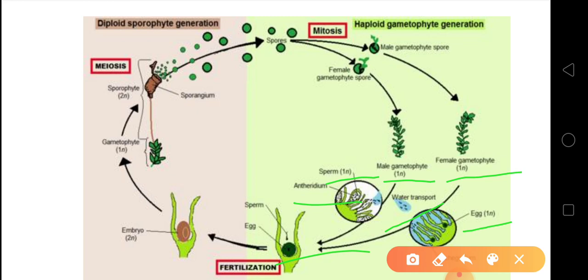The gametophyte is N, so when fertilization occurs they form a zygote that is 2N. The zygote further develops into an embryo. This embryo again forms the gametophyte — meaning a new plant can grow. From male and female gametophyte, the egg and sperm are released, they come in contact, form a zygote, which develops into an embryo, and the embryo forms gametophyte. Then this gametophyte generates the sporophyte.